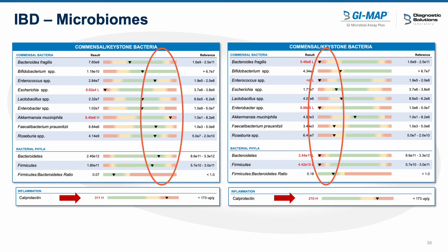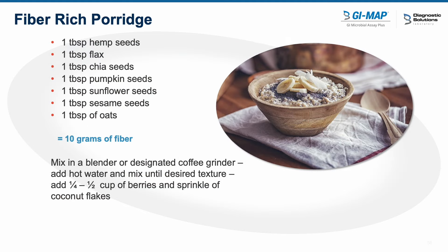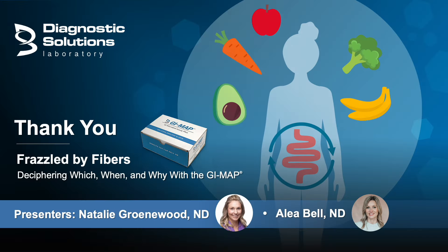Please take a picture of this recipe if you're looking for a new fiber-rich breakfast. This porridge is jam-packed with 10 grams of fiber and is my absolute favorite way to start the day. Thank you so much for joining us today. This concludes our presentation on Frazzled by Fibers.